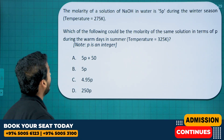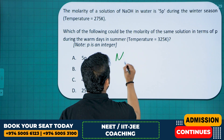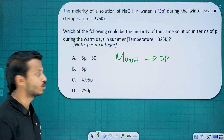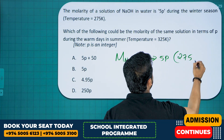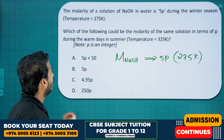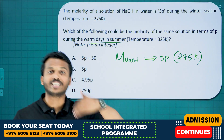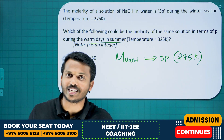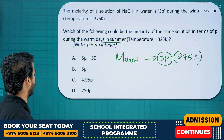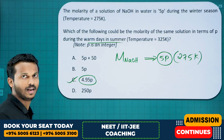The molarity of a NaOH solution in water is 5P at 275 K (winter). Which could be the molarity of the same solution during warm days (summer)? Winter to summer means temperature increases. As temperature increases, molarity decreases — so molarity should be less than 5P. The answer is 4.95P, which is less than 5P.